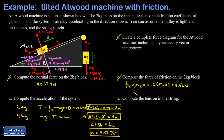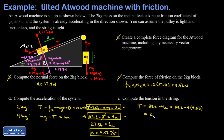To find tension, we use the second equation: T = 39.2 minus 4a = 39.2 minus 4 times 4.56, which gives 21.0 newtons to three significant figures. As a check, substituting into the first equation also gives 21.0 newtons, confirming the result.